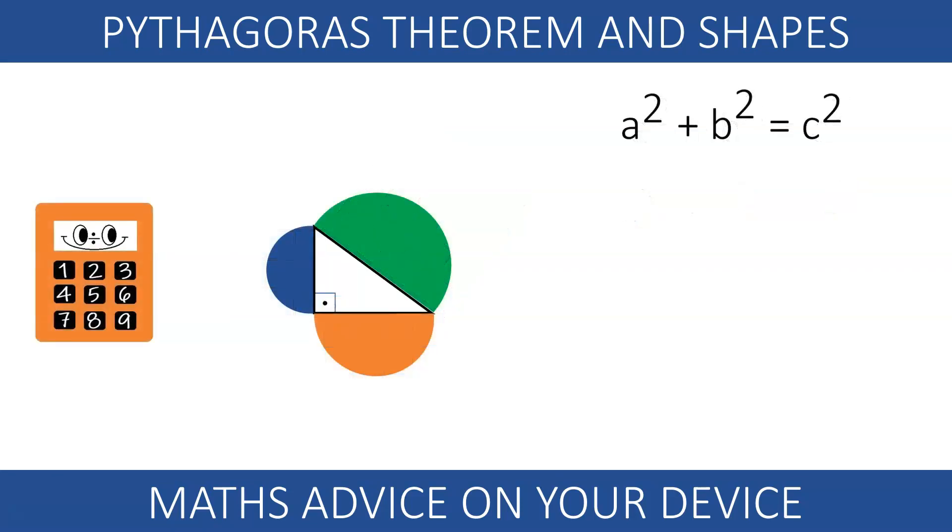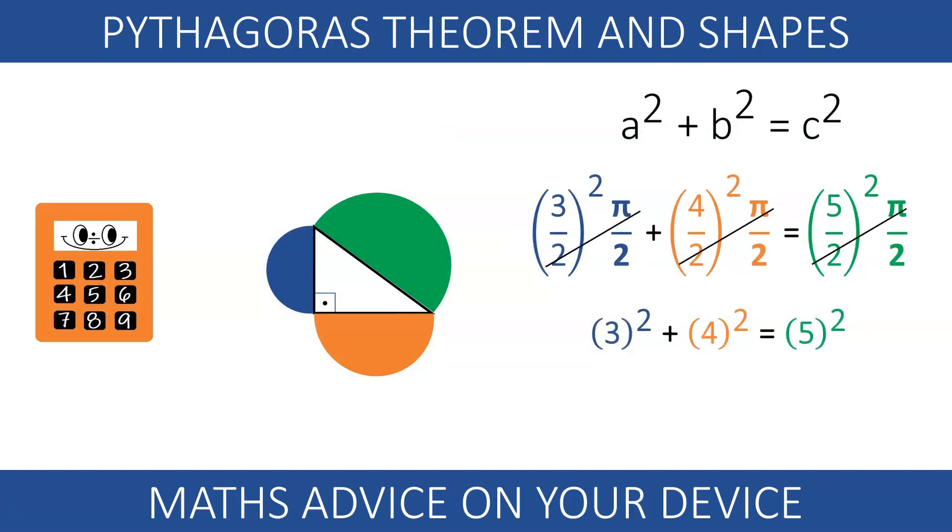On that video we saw that Pythagoras also works for semicircles. The blue and the orange semicircle add up to the green one. Interesting!